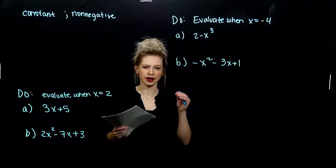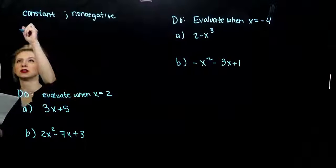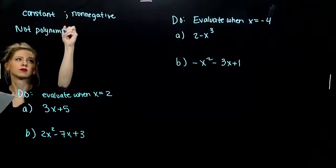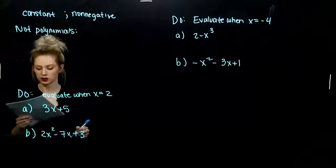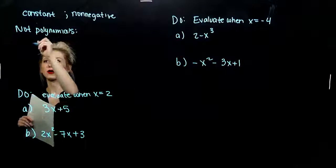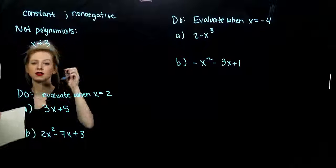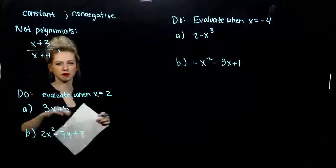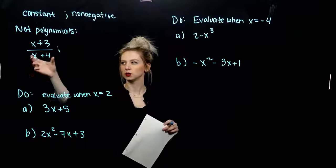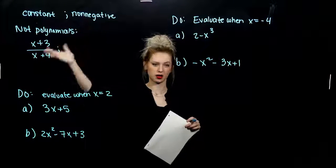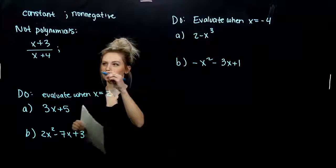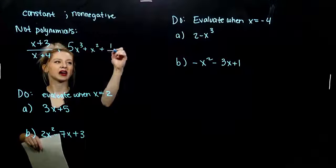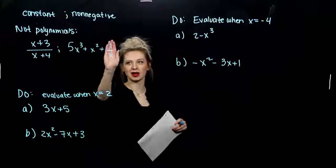I think it's helpful to look at a few non-examples, things that are not polynomials. Anything with a negative power. If I go ahead and put x plus 3, that is a polynomial, but if I divide it by x plus 4, now it's not. Since we have powers down below, this whole chunk would have to have a negative power if we were going to put it up top.